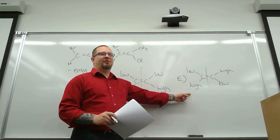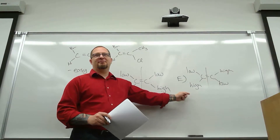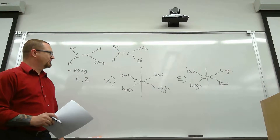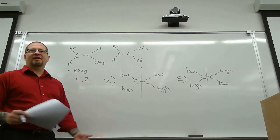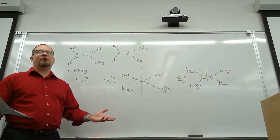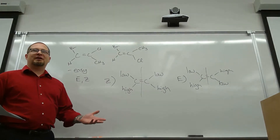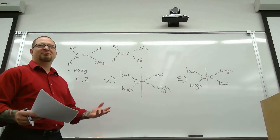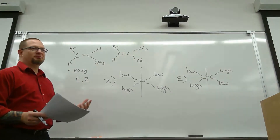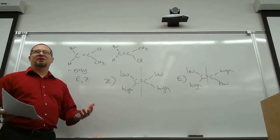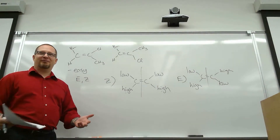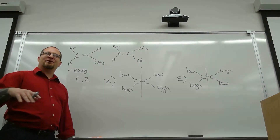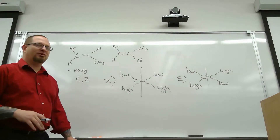Once you get used to the rules for prioritizing groups, the E/Z system is actually pretty easy. We rank everything on each side of the double bond — one group will be lower priority and one will be higher priority. Depending on the orientation of the high and low priorities, the high priorities can be on the same side (Z) or on opposite sides (E). The easiest way to remember: Z means the high-priority groups are on the Z's same side. If they're not on the same side, it's E.